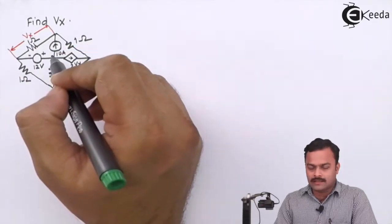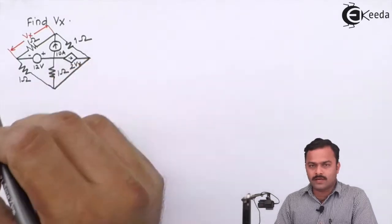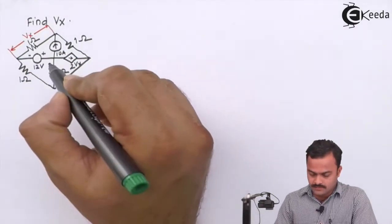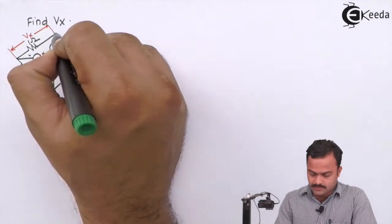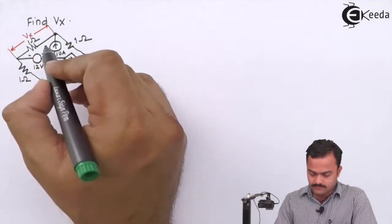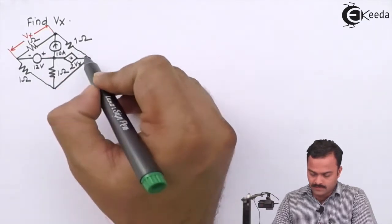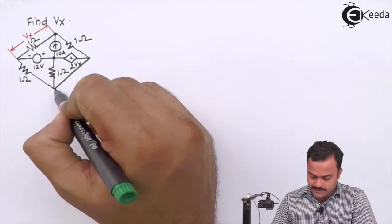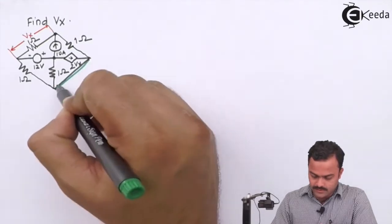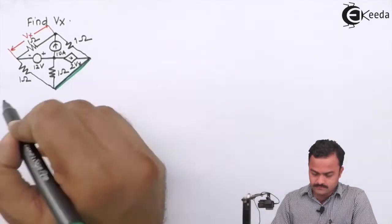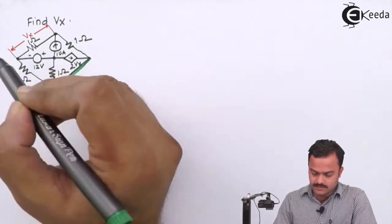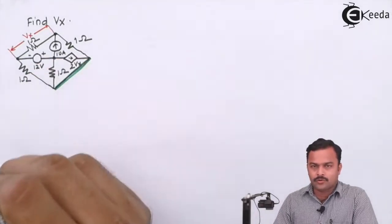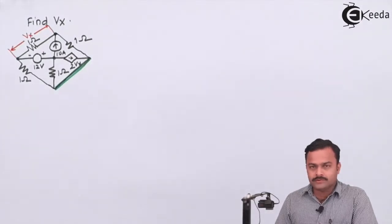Let's solve it by nodal analysis. Step number one is to mark all the nodes in the circuit given. So this will be the node, this will be your node — these two points are joined with a wire so this entire thing can be considered as one node, and this is another node.